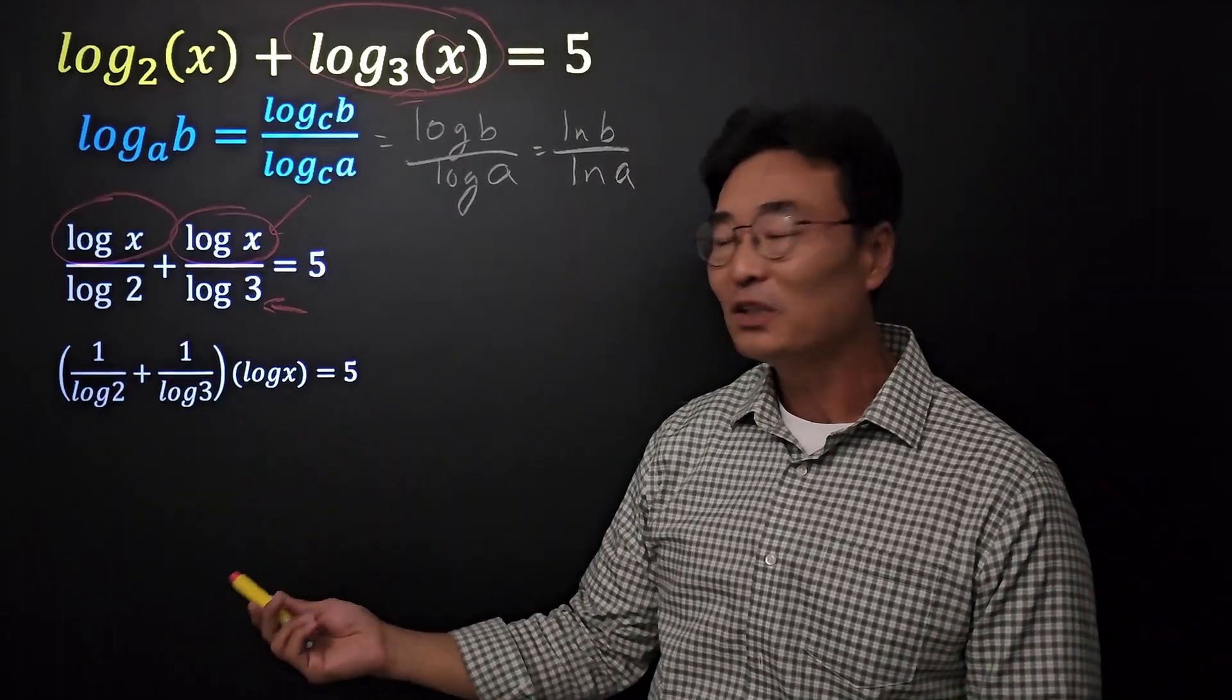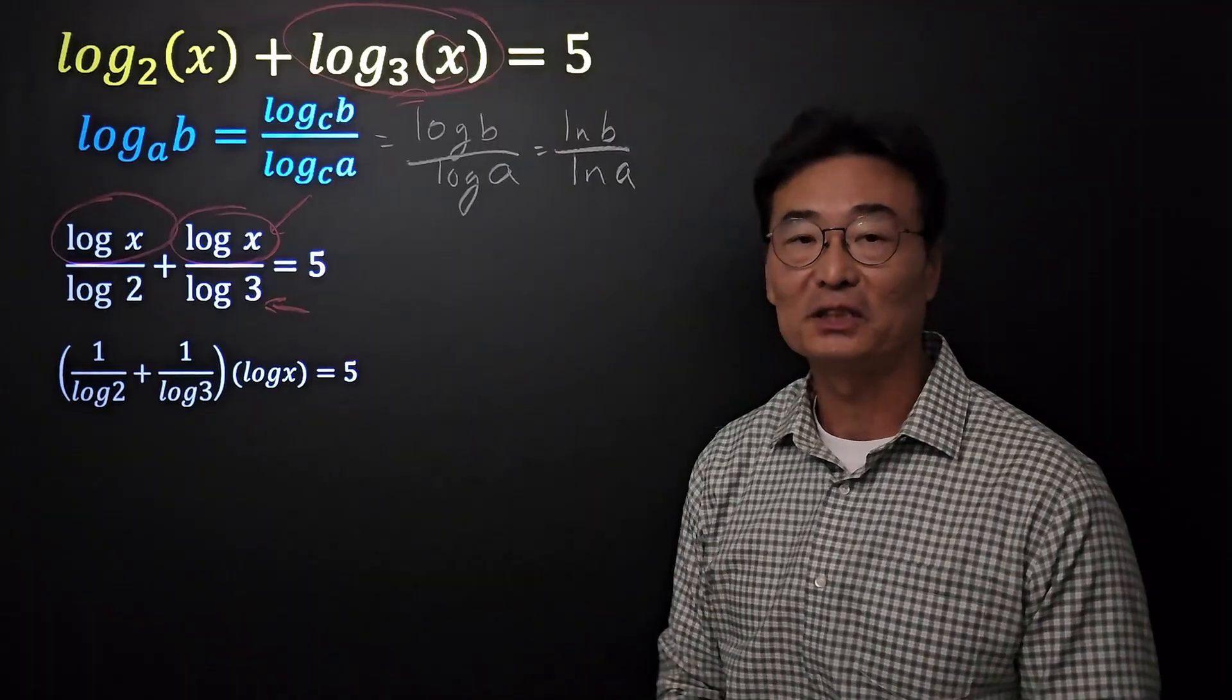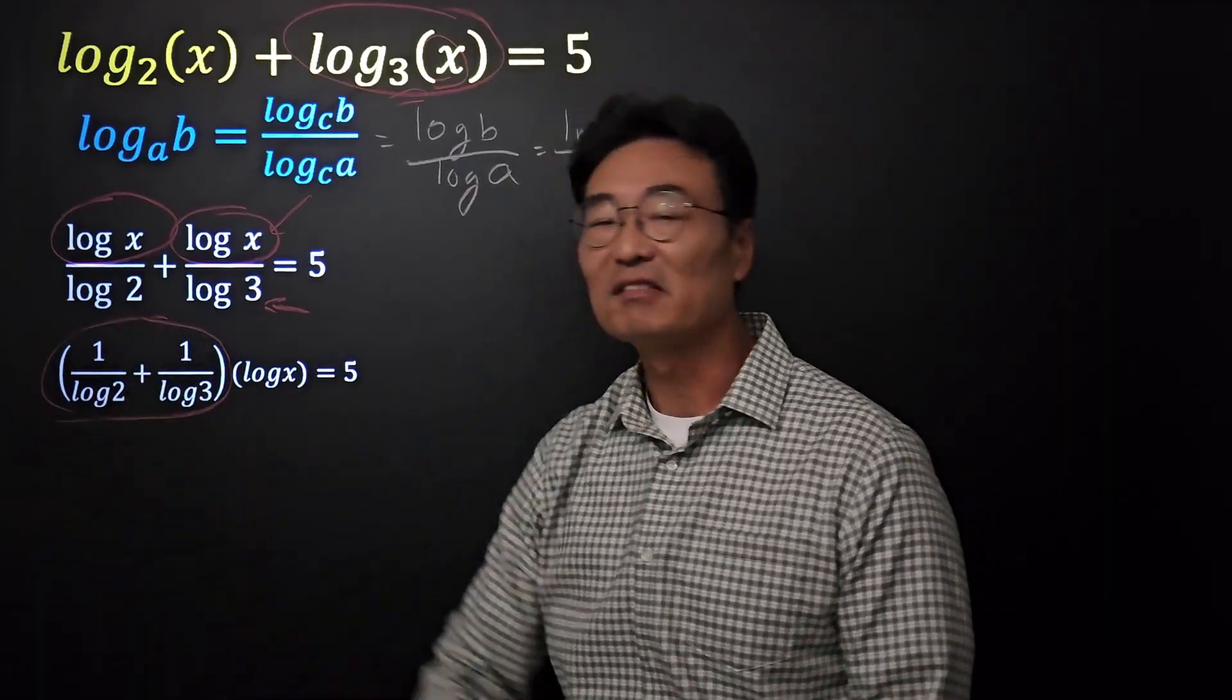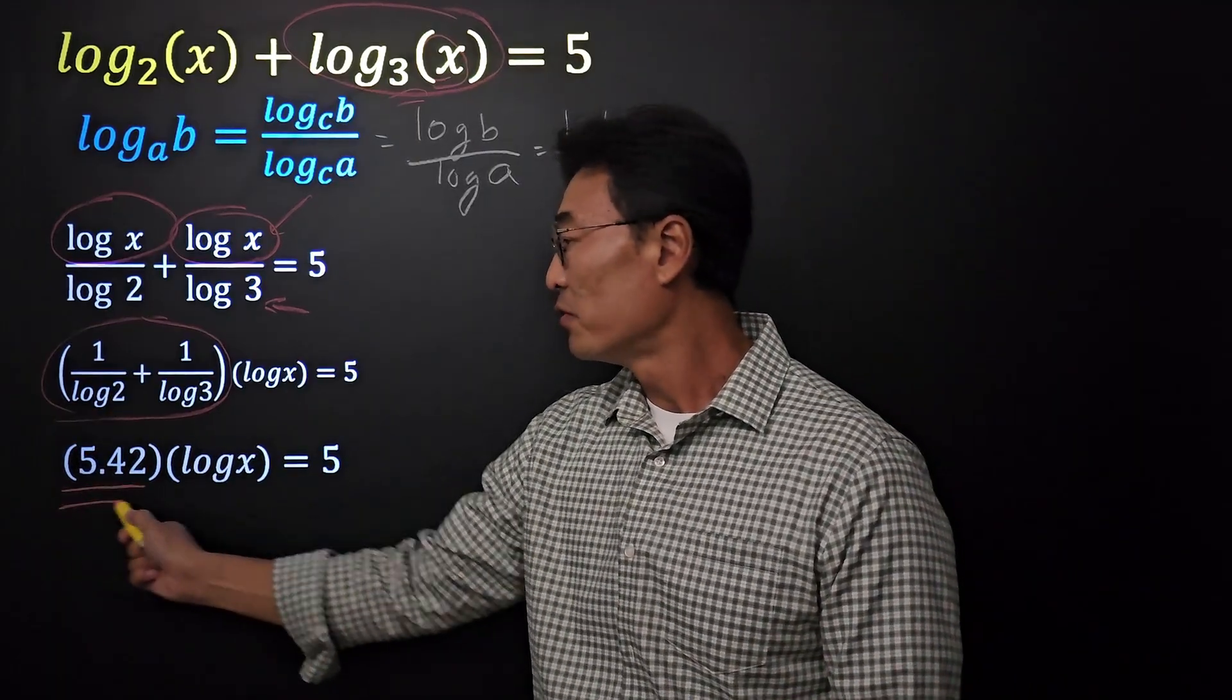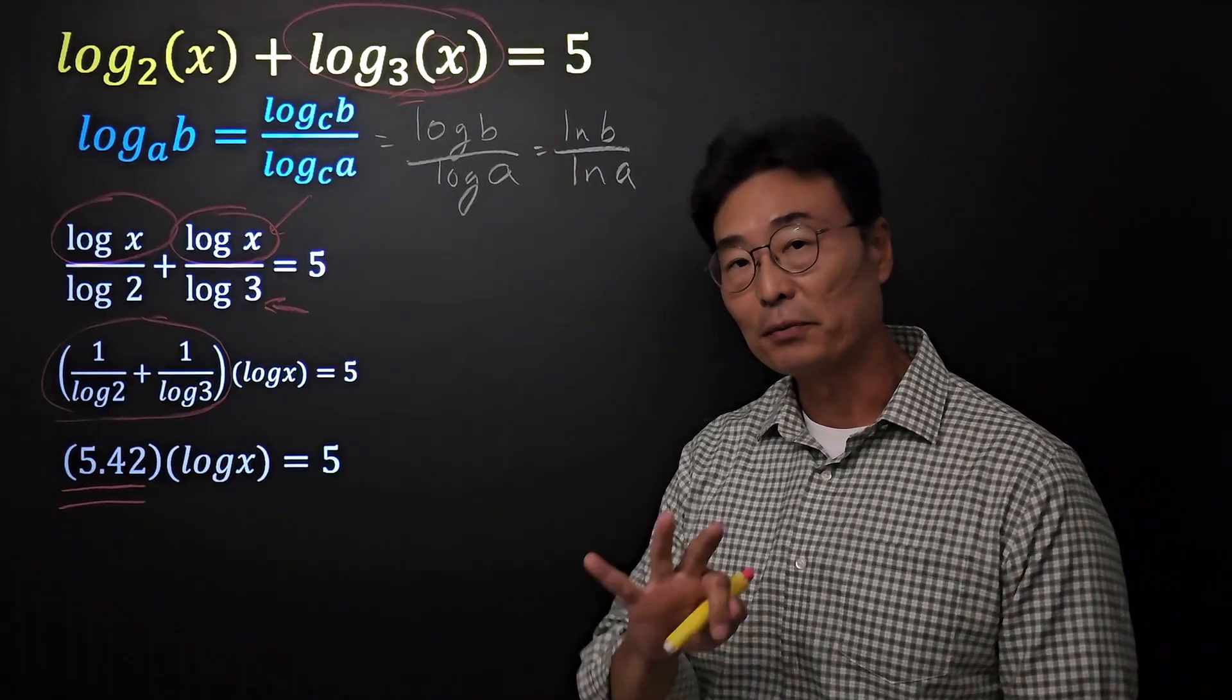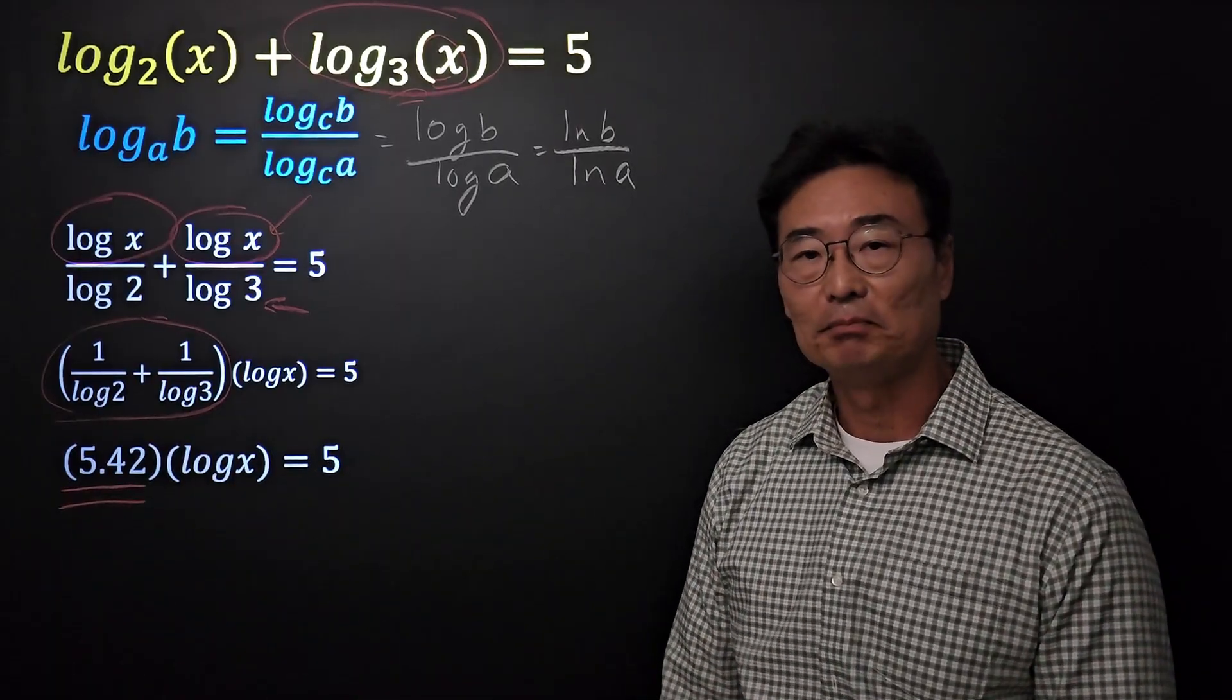Then, at this point, we don't want to continue to have this 1 over log 2 plus 1 over log 3 with us because it's just too much work. We want to plug this, everything that you see in this parentheses, in the calculator, where we get 5.42 if we round it off to 2 decimal places. For a more accurate answer, you can round it off to 3 or 4 decimal places as well. But usually, 2 decimal places will do the job.